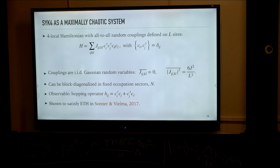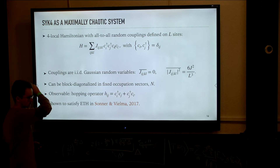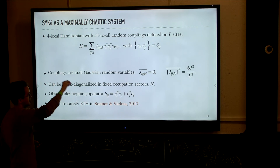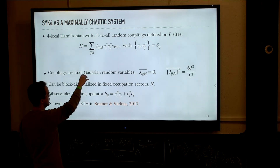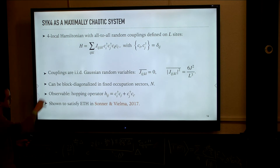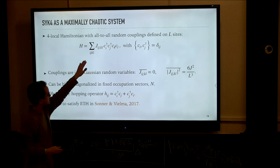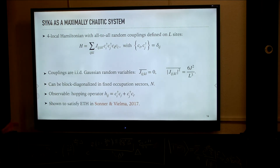The only way to see this was to put it on a computer in a concrete system. We studied the many-body system known as the SYK model — a set of L sites of spinless fermions with a Hamiltonian that is a sum of monomials which are four-site interactions, with a coupling drawn from some random distribution. This is a system with all-to-all random couplings.